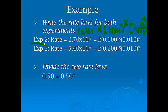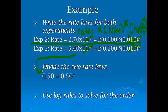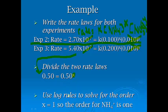When I say divide them, I'm literally going to put this is my division line. Now, the nice part here is the reason we make these stay the same is that we can totally cross those out. So now it's just a matter of doing this math. 2.7 divided by 5.4 is 0.5. 0.1 divided by 0.2 is 0.5. Then I use log rules to solve for the order. 0.50 to the first is 0.50. So x is 1.